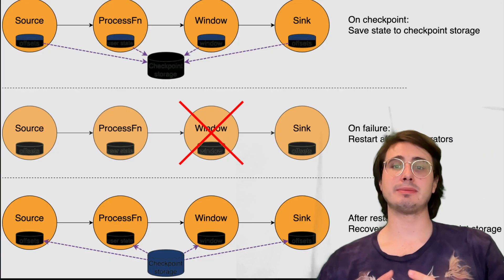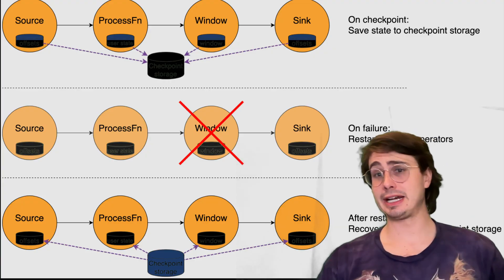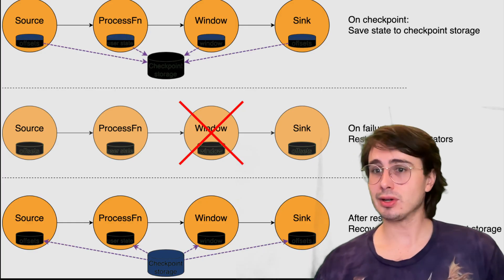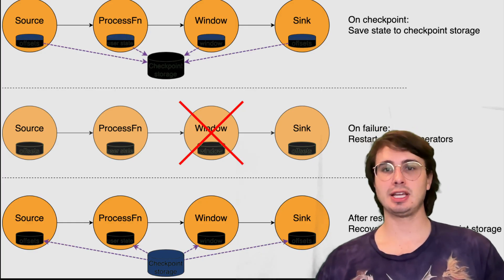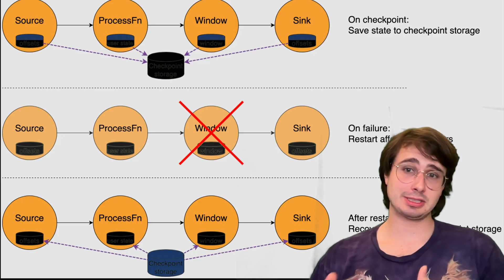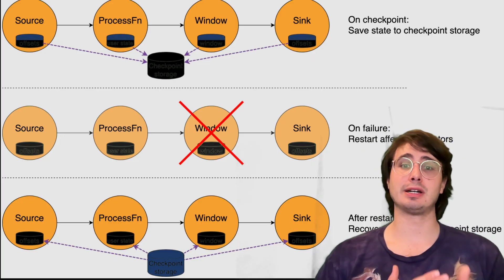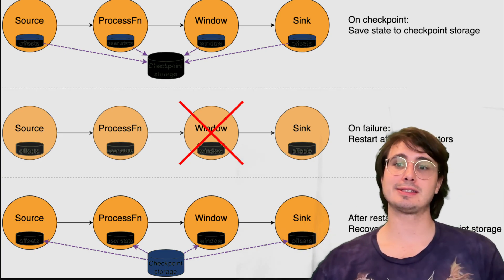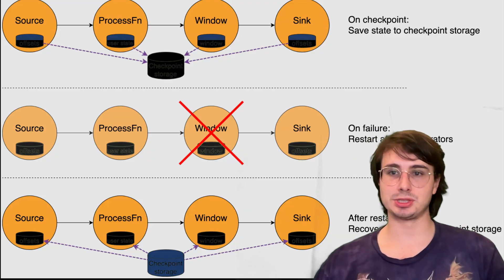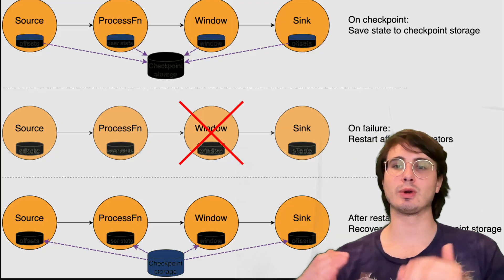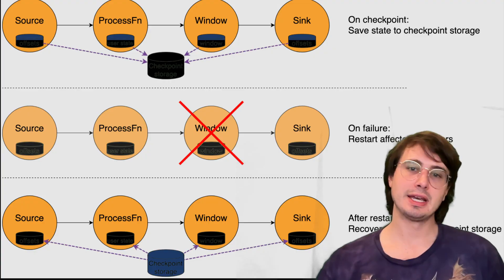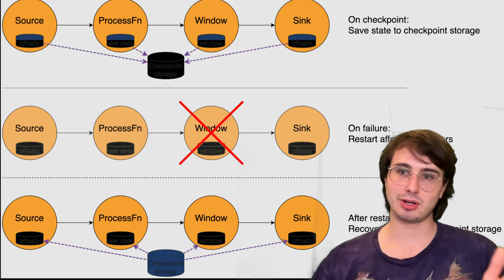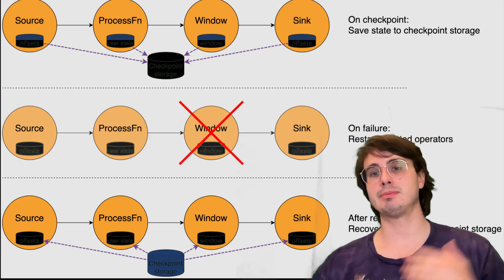You'll also need to choose between aligned and unaligned checkpoints. Aligned checkpoints provide predictable behavior and work well for most applications, whereas unaligned checkpoints significantly reduce checkpoint barrier impacts on latency-sensitive applications, but require much more storage space and network bandwidth because you're storing more actual information within each checkpoint. Enabling unaligned checkpoints makes sense when you observe checkpoint barriers causing back pressure in your application.